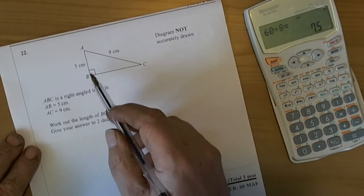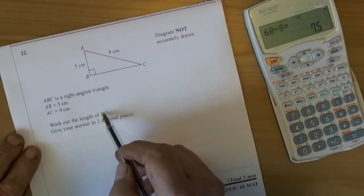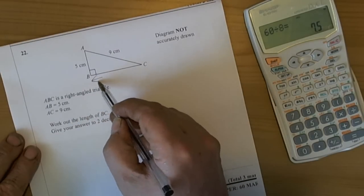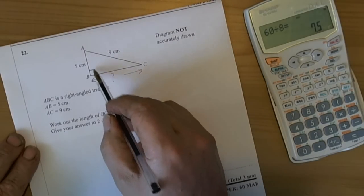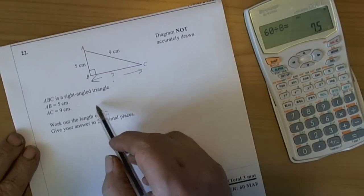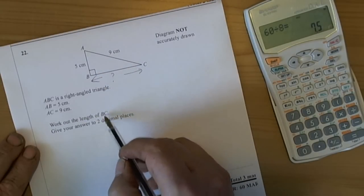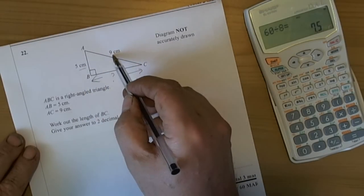Now this question is asking you to work out the length of BC, so we're talking about this length here. Now we recognize that this shape is a right angle triangle, and it's asking you to find a missing length when you've been given two other lengths.